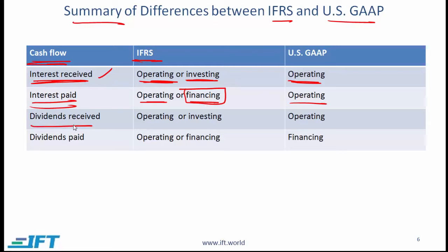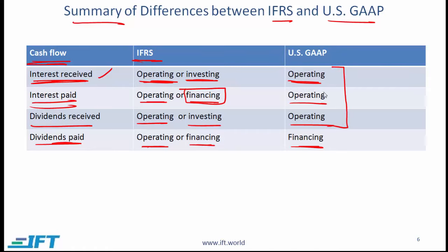For dividends received — where a company invests in shares of another company and receives dividends — IFRS allows operating or investing classification, while US GAAP requires it to be shown as operating. For dividends paid on the company's own stock, IFRS allows operating or financing, while US GAAP categorizes it as financing. Notice US GAAP gives no options: it is always operating except when a company pays dividends. With IFRS, there is always an option — one of which is always operating, and the other depends on whether the activity is financing or investing. You must learn this table.